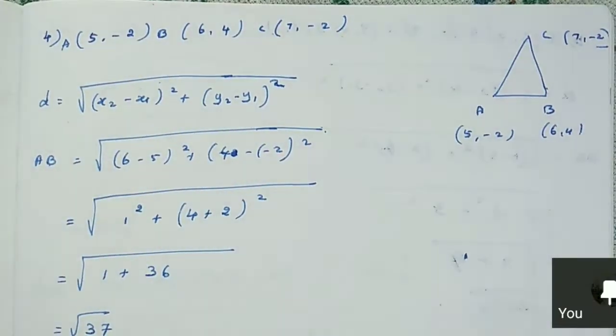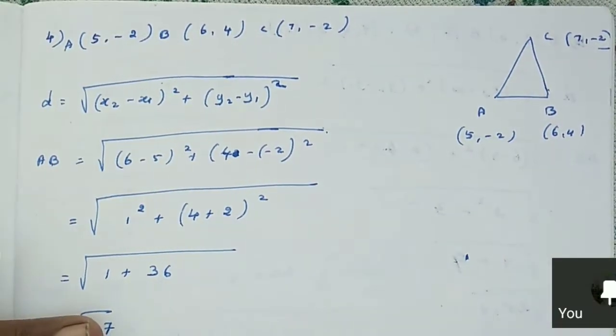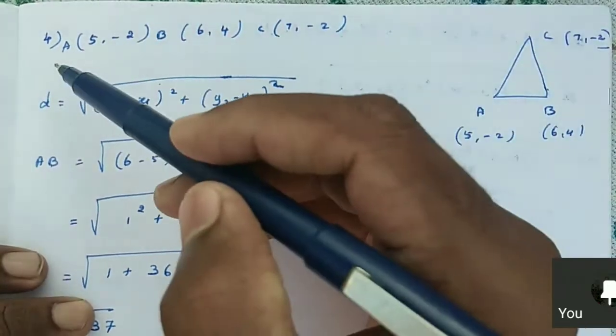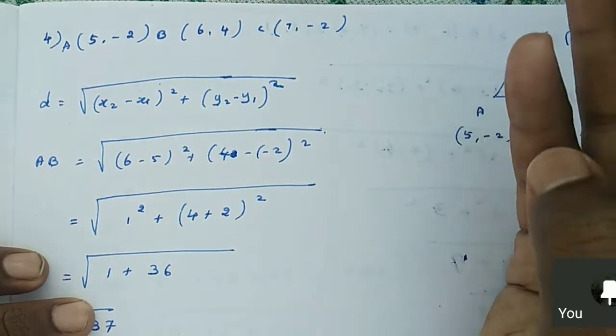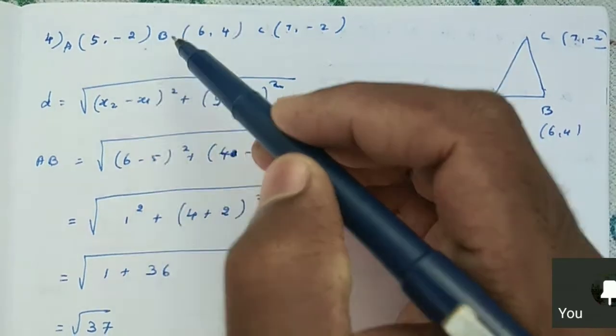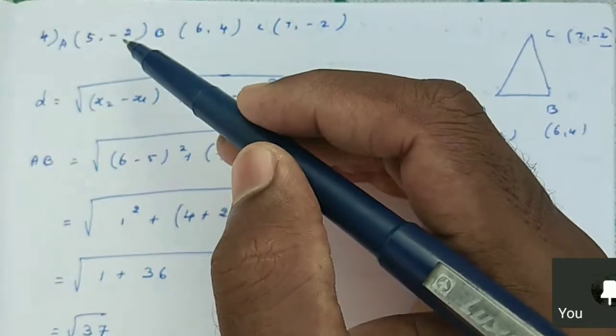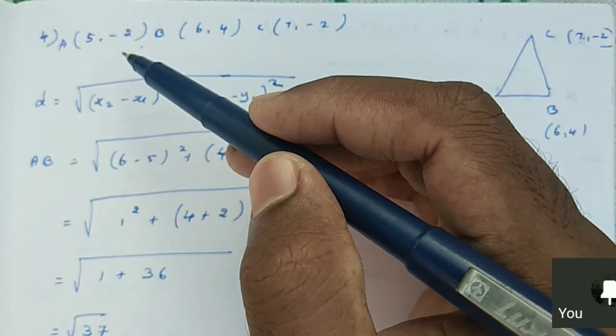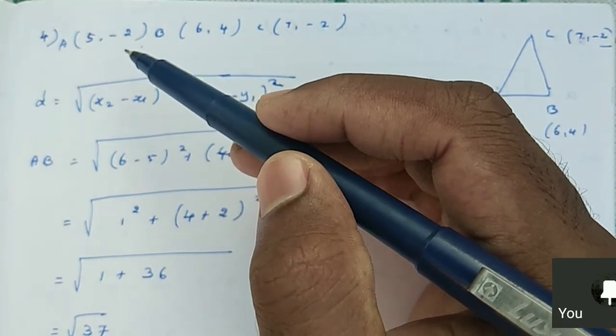Now here they have given three points. How will you check if the given three points form an isosceles triangle? What is the condition? You can find the distance. Just consider the three points as ABC, the vertices of the triangle. Then find the distance of AB, BC, and CA. If any two distances are equal, then it is an isosceles triangle.